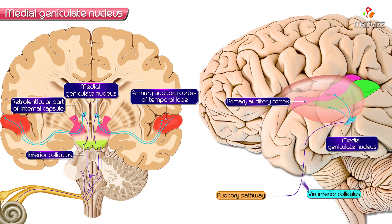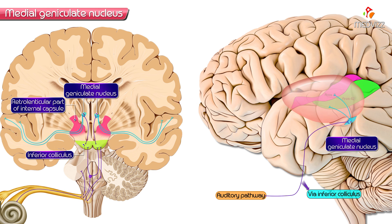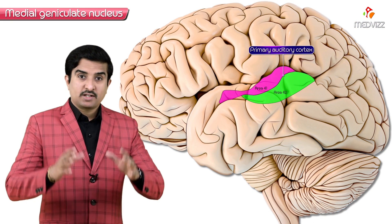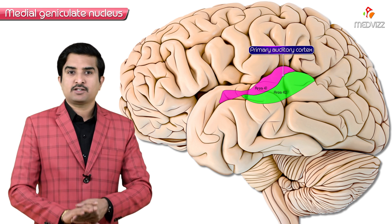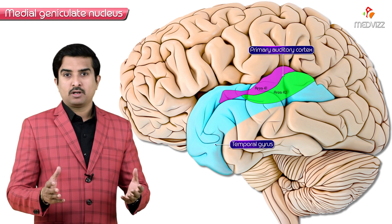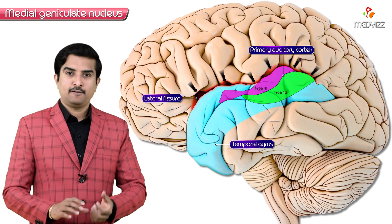The final step in the ascending auditory pathway consists of axons that originate in the Medial Geniculate Nucleus and pass through the internal capsule to reach the primary auditory cortex of the temporal lobe — broadly areas 41 and 42 — situated on the dorsal surface of the posterior temporal gyrus, largely hidden within the lateral fissure.